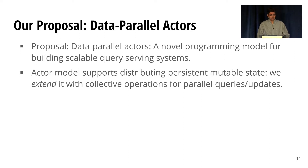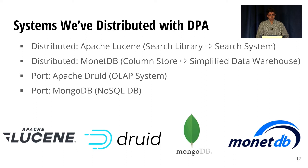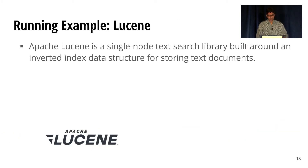We started with the actor model, which does a good job of supporting distributed, persistent, mutable state, then extended it with collective operations to support the parallel queries and updates that these query serving systems need. We've applied Data Parallel Actors to many systems — we've used it to distribute some single-node query serving systems like the search library Lucene and the column store in MinADB. We've also ported some distributed systems like Druid to DPA, replacing their native distribution layers, which were custom built, with our general purpose runtime.